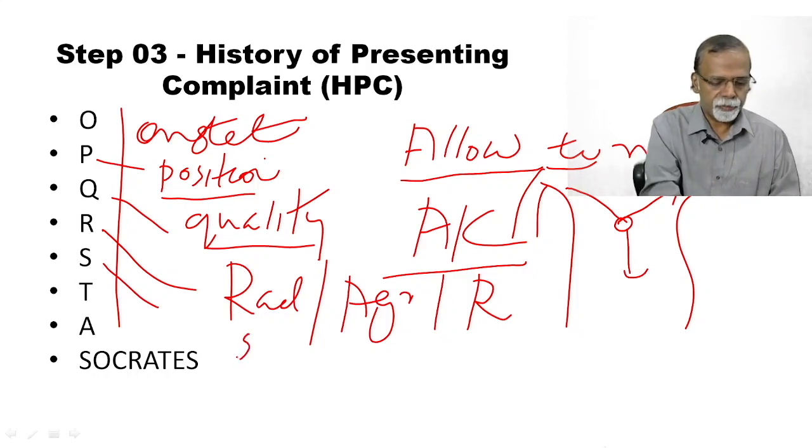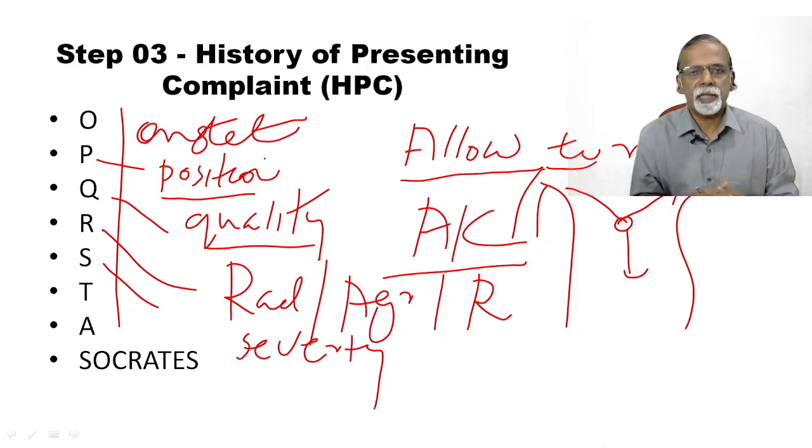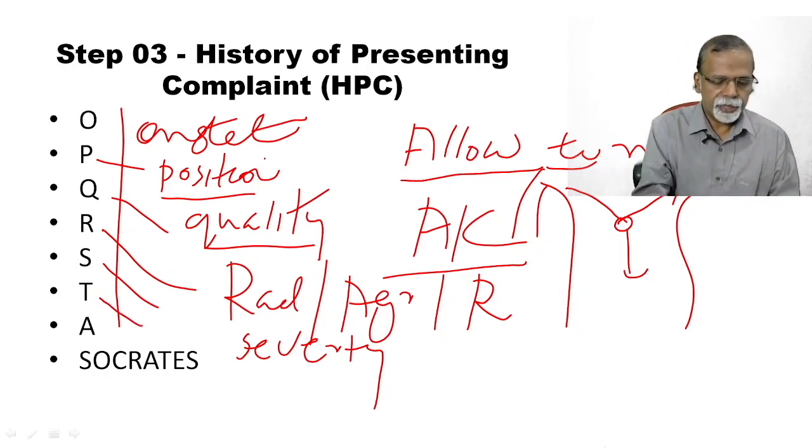S stands for the severity. How will you assess the severity of the pain? One, by asking the patient will say mild pain, moderate pain, severe pain. Second is: ask the patient what did they do with the pain? Somebody says: because of chest pain I didn't go for any work, I was taking rest. That means the pain was significant. Or you can use a visual analog scale. What is the visual analog scale? Tell the patient: if the maximum pain is 10 and no pain is 0, where does your pain come? Somebody may say at the level of 5, 6, 7, something like that, and you can quantify the pain.